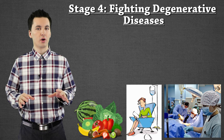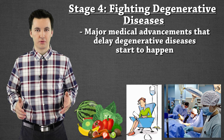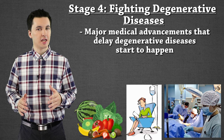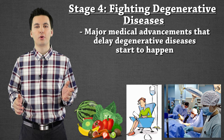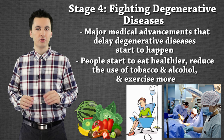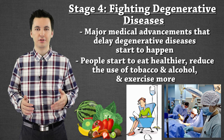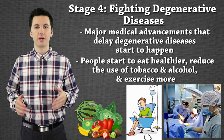In stage four, society actually starts to fight degenerative diseases. This is where we have more medical breakthroughs. We are now doing surgeries and able to push back cancer. We haven't cured cancer yet, but we are able to fight it — using chemotherapy and different treatments to prolong life and increase quality of life. In this stage, people are also going to make different decisions: they're going to eat healthier and exercise more. Ironically, we'll also have people who become complacent — more sedentary, eating more junk food — as we have more amenities and luxuries we can afford.